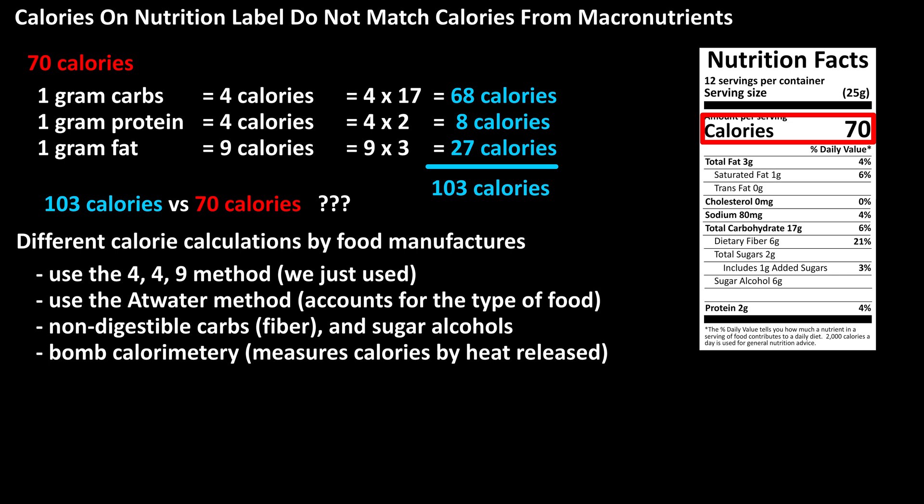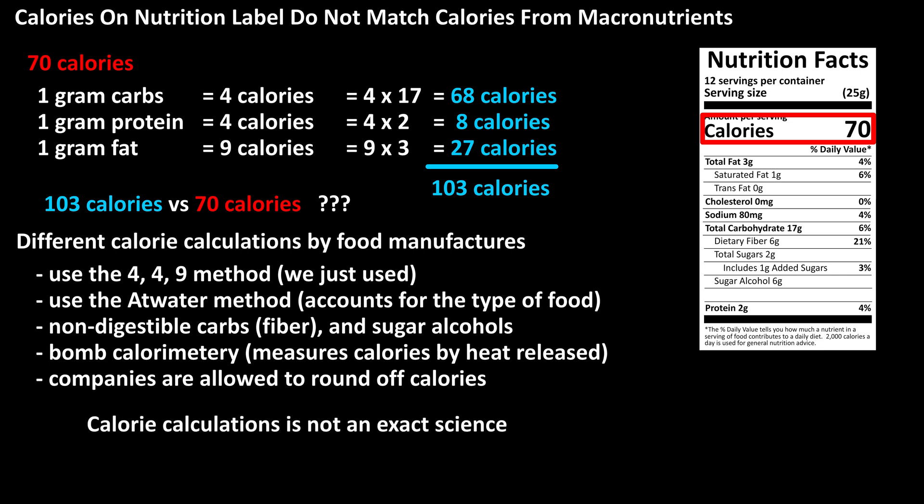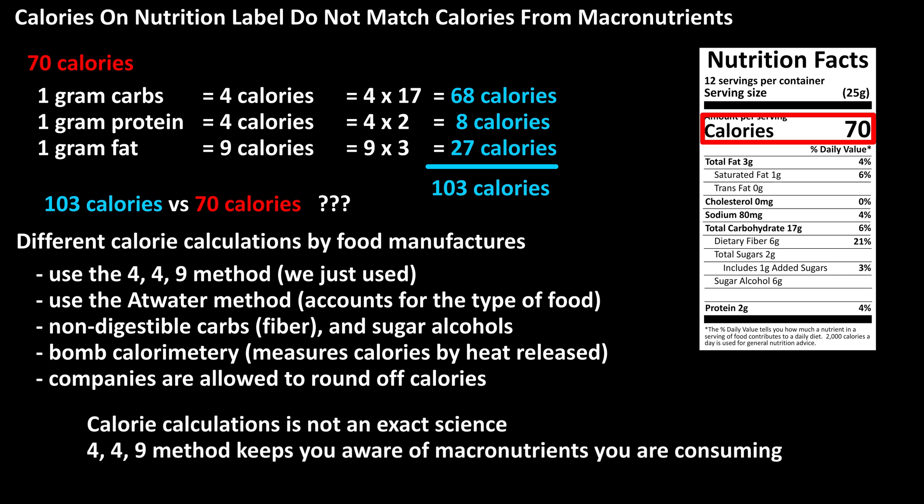One other thing to mention is that companies are allowed to round off calories, so this can also be a factor in why the calories on the food label do not match the 4-4-9 method. The bottom line is that the total calories from carbohydrates, protein, and fats are not an exact science. I think that using the 4-4-9 method to calculate calories is better than looking at the calories listed on the label, as this requires you to look at the amount of carbohydrates, protein, and fats, which can help you consume a more well-rounded and balanced diet.